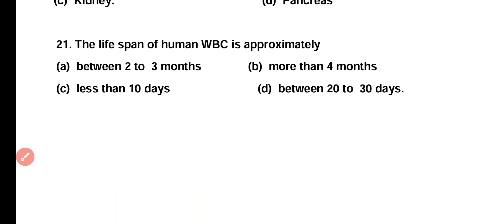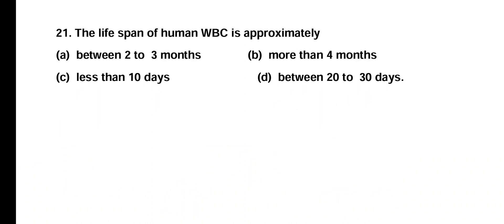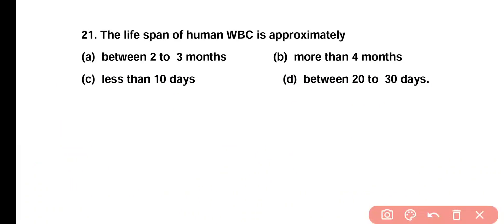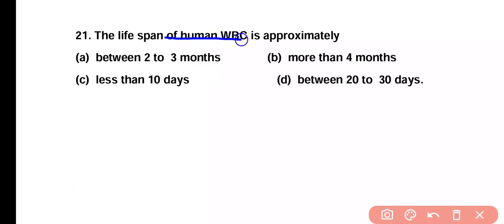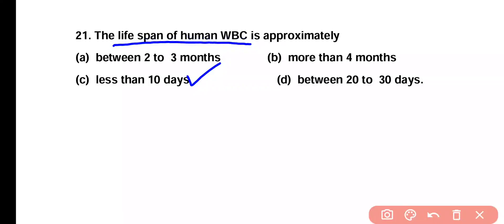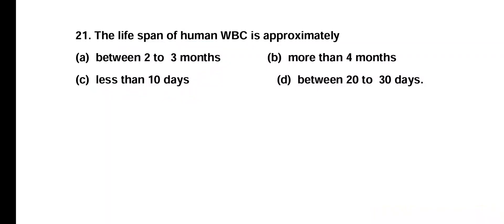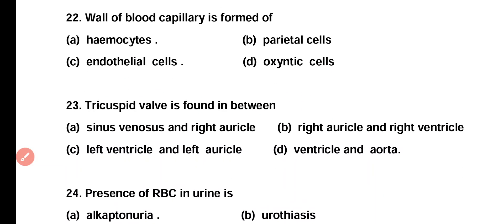Question number 21. Lifespan of human white blood cells is approximately: between 2 to 3 months, more than 10 months, less than 10 days, or between 20 to 30 days? Correct answer is option C. The lifespan of human white blood cells is shortest, approximately less than 10 days only.